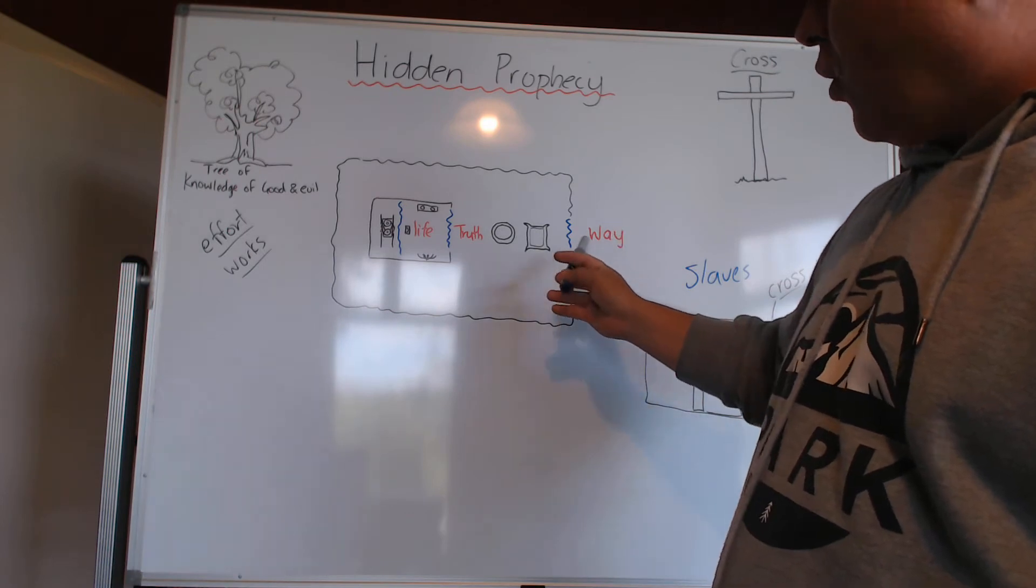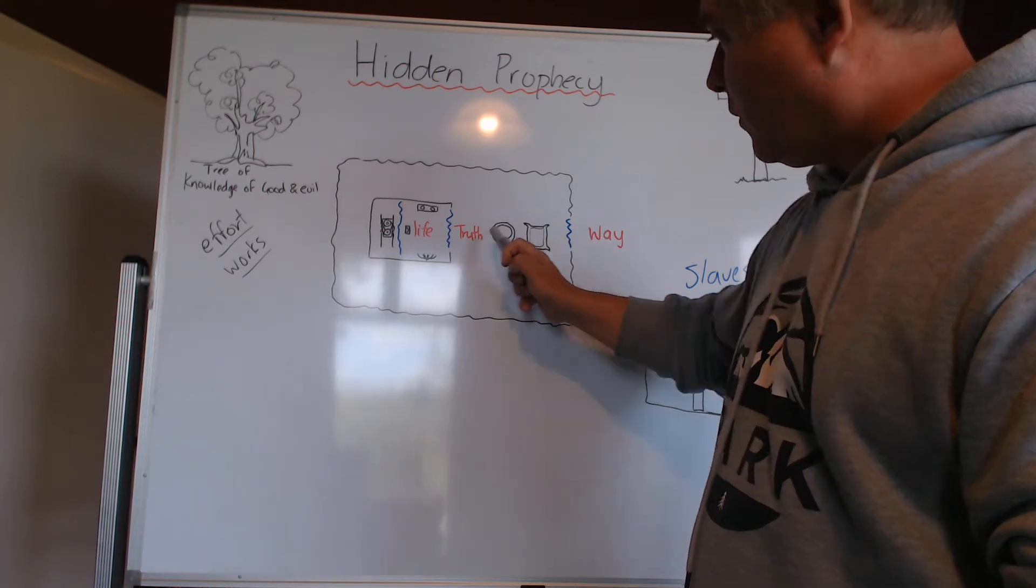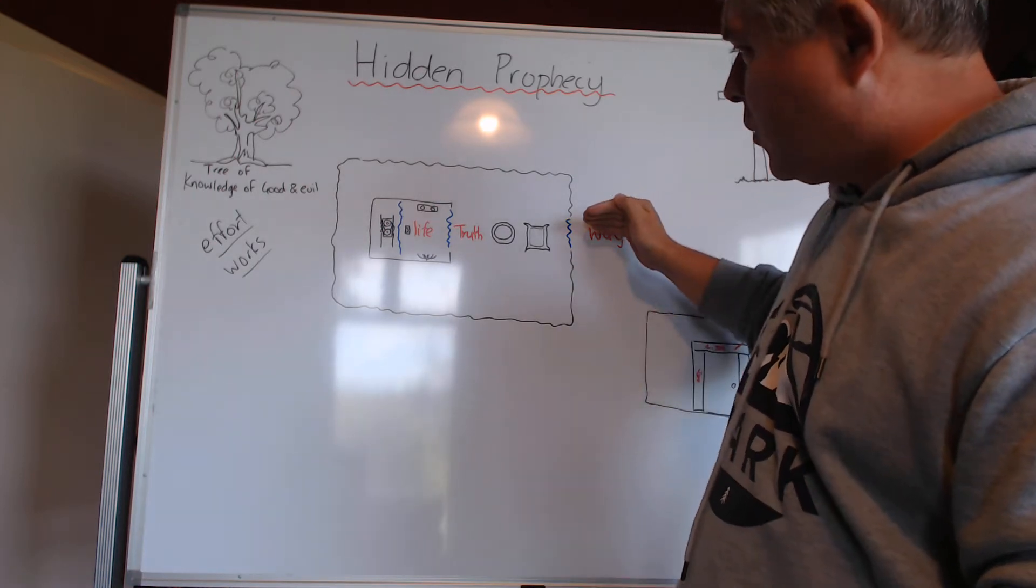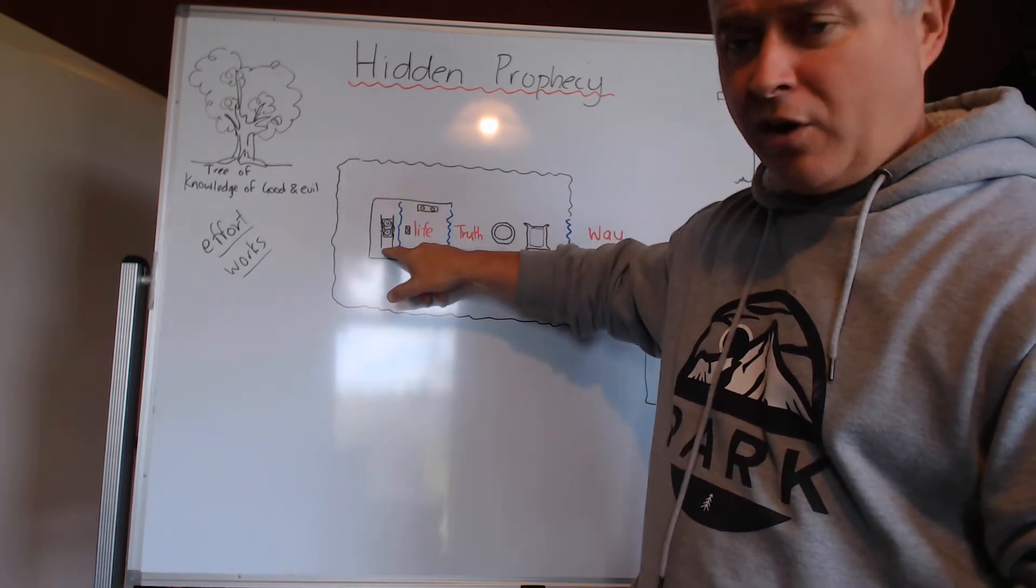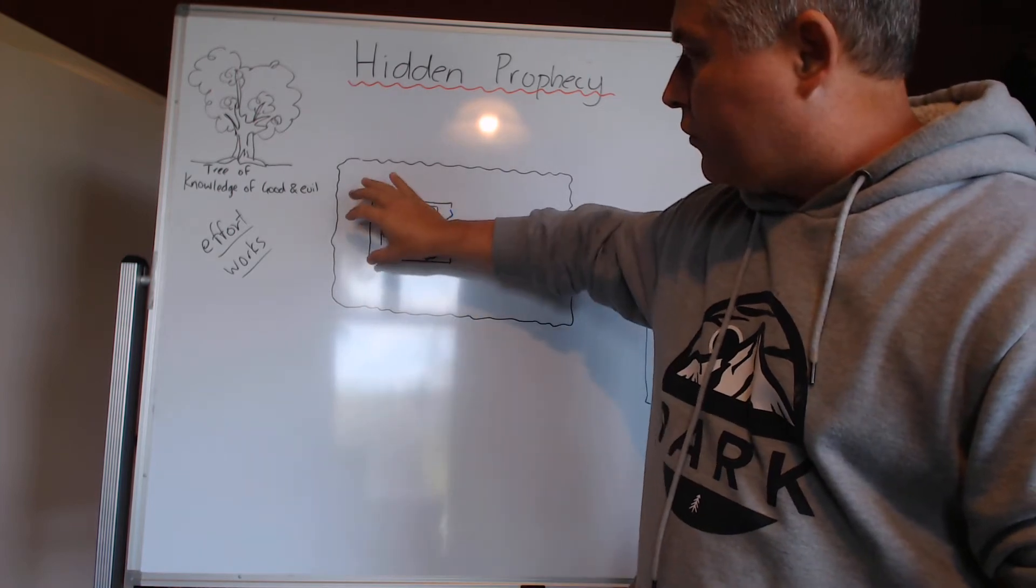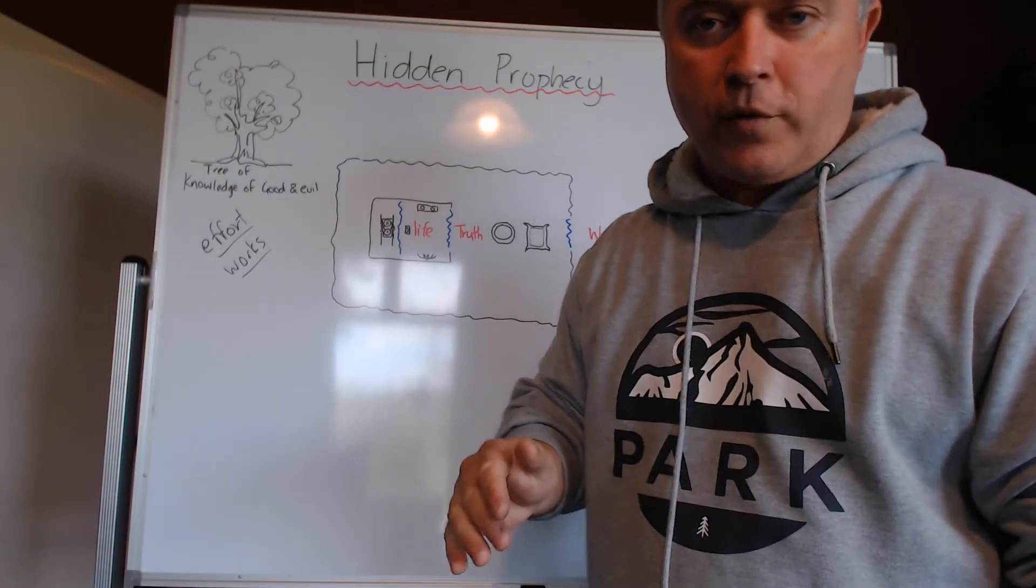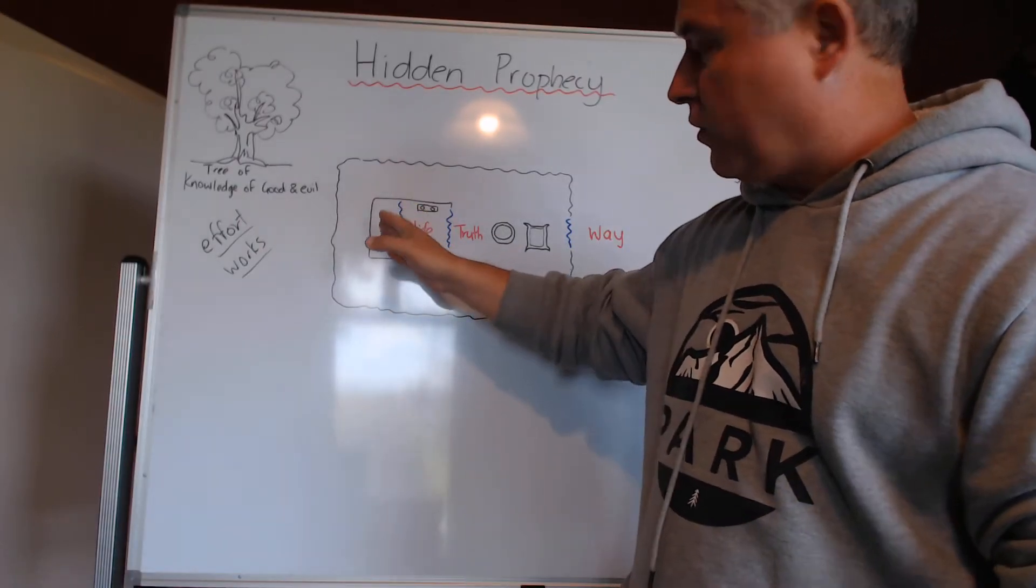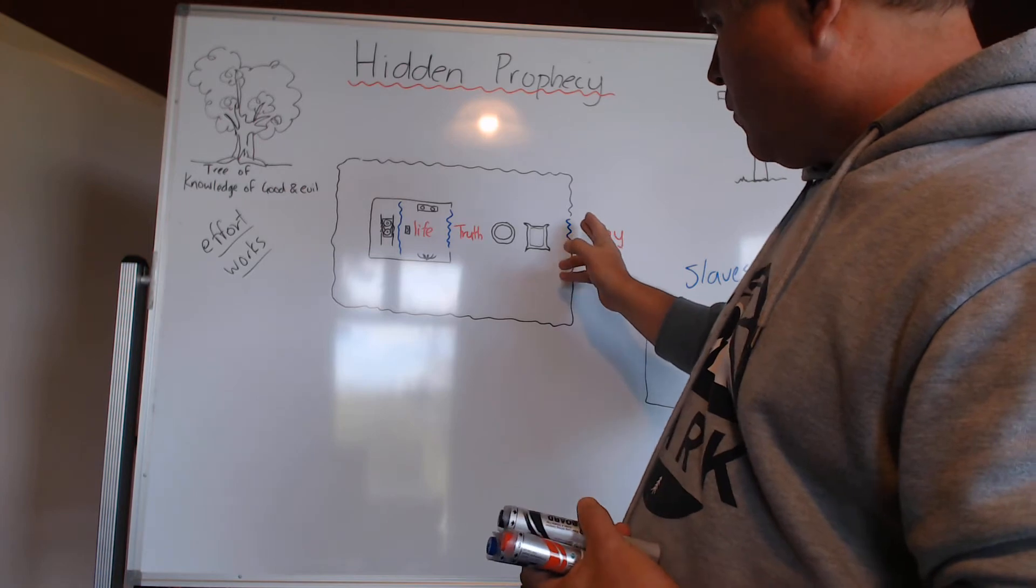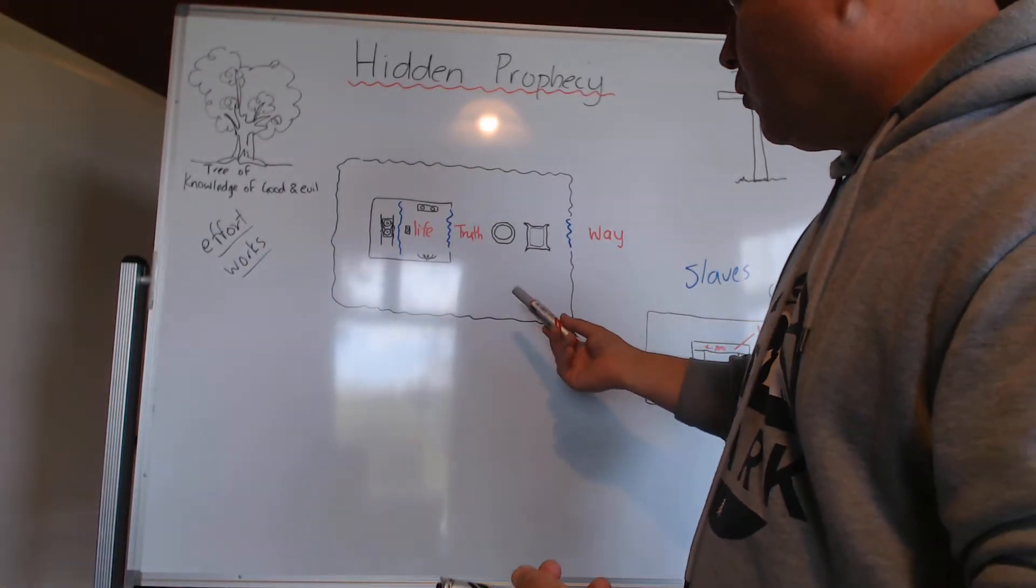Jesus says I am the way, the truth and the life - no one comes to the father but by me. The doorways are the way, the truth and the life. He is saying you cannot get to the holy of holies or Shekinah glory or God's presence unless you go through him. There is no way into the presence of God unless you go through him - the way, the truth and the life. He was trying to show the Jews that he is the doorways, he is the way there.